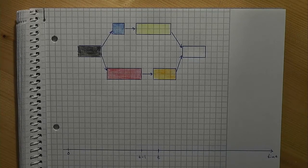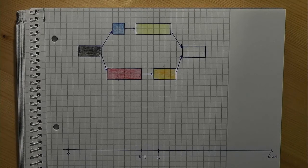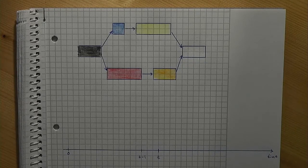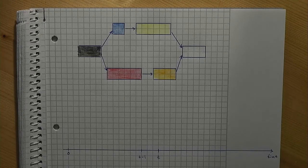Without loss of generality, we assume that we have a first job to be scheduled that is unique, say job 1, the black one in our picture, and we have a unique last job to be scheduled, say job n, the white one in our picture. Our objective is to complete all jobs as soon as possible.